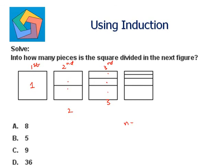So n equals 1, one piece. N equals 2, two pieces. N equals 3, three pieces.